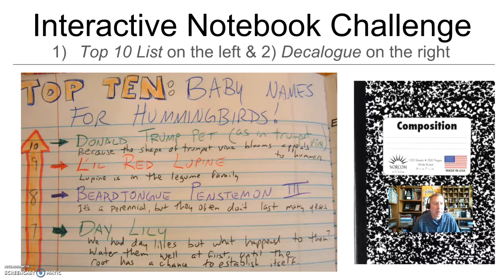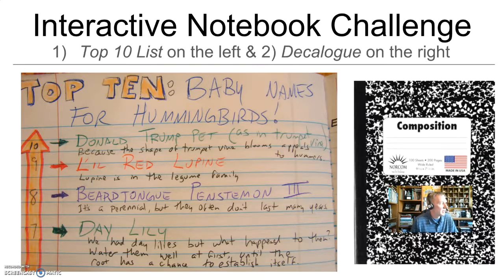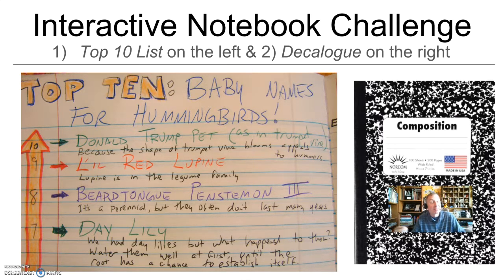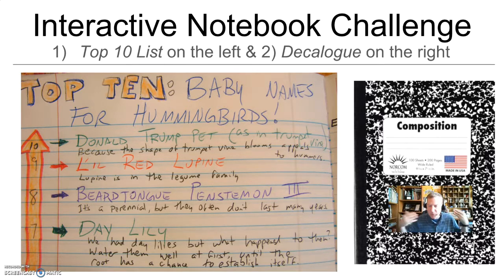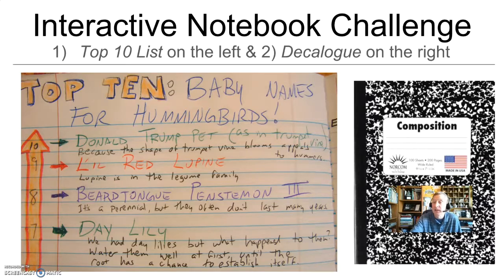Here are my top 10 lists. I decided to come up with top 10 baby names for hummingbirds. My humor was based on looking up plants that attract hummingbirds and making funny names out of them. Instead of Trumpet Vine, I came up with Donald Trumpet. Little Red Lupine might be Little Red Corvette or Little Red Riding Hood — one of those two. In black ink underneath each name, I've put a little fact about them. I like Beardtongue Pennstamen III — it sounded like a very rich person's name. Beardtongue and Pennstamen are the same plant. Daylilies brought up a new question: what happened to my daylilies? Sometimes investigating in your interactive notebook leads to new questions.